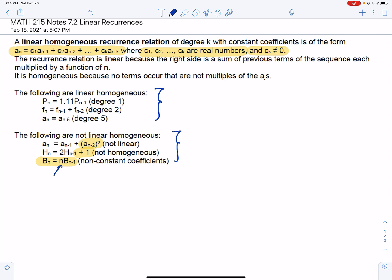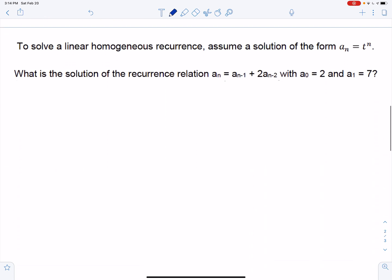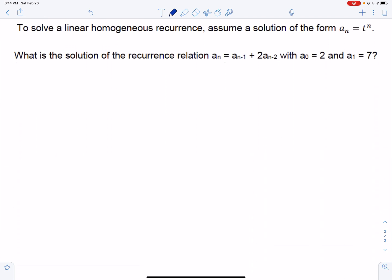So the question is, how do we solve it? We're just going to get right to it. Here is the premise. We assume the solution is of the form a_n equals t^n. So we're going to solve the recurrence a_n equals a_{n-1} plus 2a_{n-2}, where the 0 term is 2 and the first term is 7.